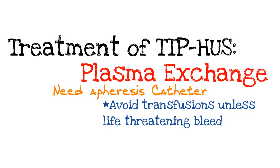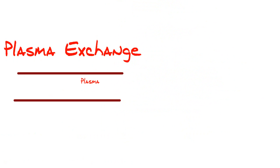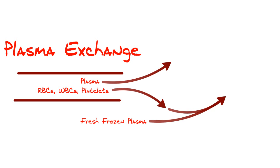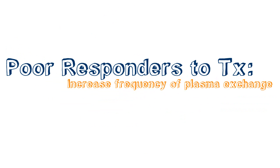What exactly is plasma exchange? Imagine a blood vessel: in your blood you have plasma and then your cellular components. Plasma exchange separates your plasma from the actual cellular components. We take fresh frozen plasma — that means plasma from other people who do not have TTP-HUS — and transfuse it, instilling it into your body along with the cellular components while getting rid of your plasma. If you don't respond to apheresis, you can increase the frequency of plasma exchange, or give steroids. Generally, most people respond with those treatments.